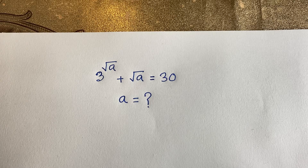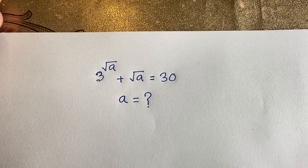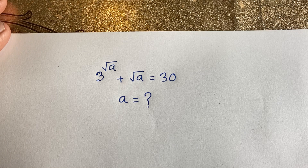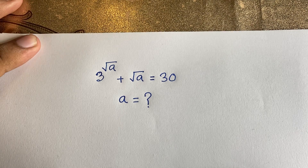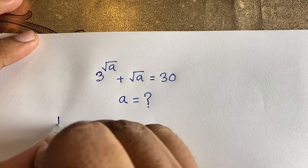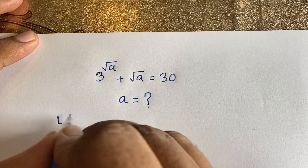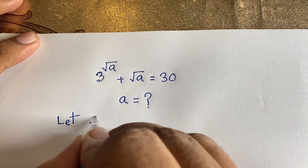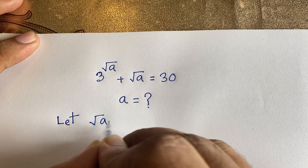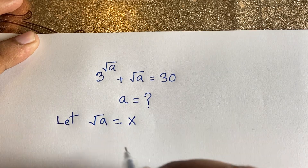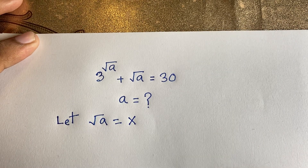3 to the power (square root a plus square root a) is equal to 30. What is a? Let's solve this interesting math problem. First, let square root of a equal x.